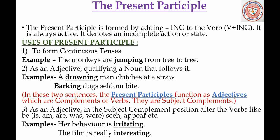As an adjective in the subject complement position after verbs like be, is, am, are, was, were, seem, appear, etc. Examples: 'Her behavior is irritating.' 'The film is really interesting.' So 'irritating' and 'interesting' are present participles in these sentences.